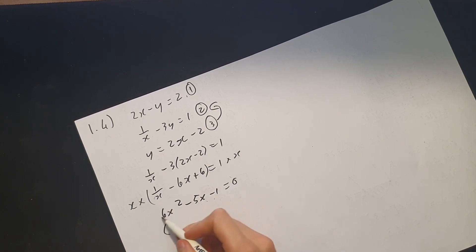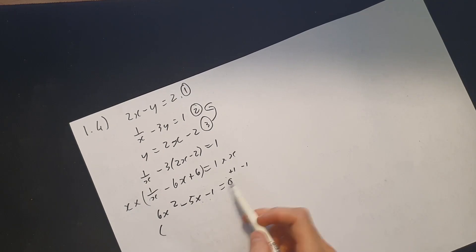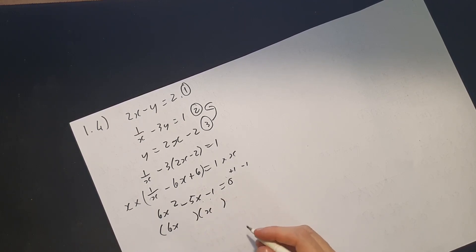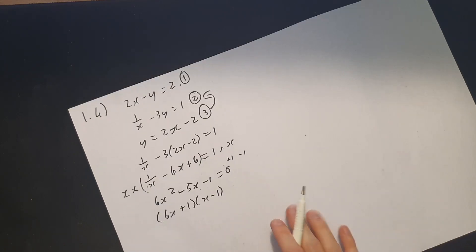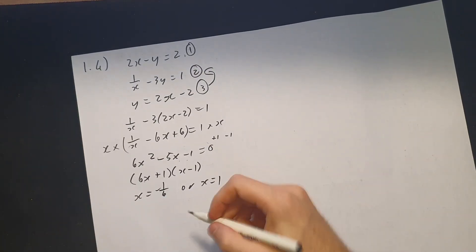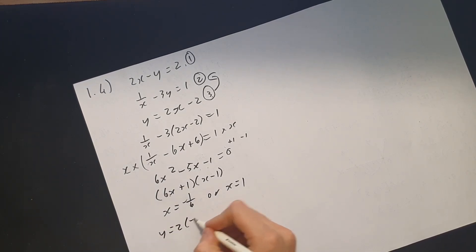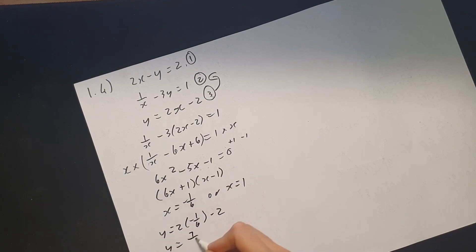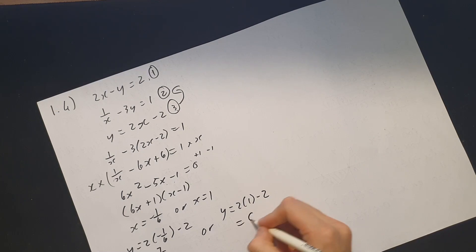Factorizing: the factors of 1 are +1 and −1. We get (6x + 1)(x − 1) = 0, so x = −1/6 or x = 1. Substituting back into y = 2x − 2: when x = −1/6, y = −7/6; when x = 1, y = 2(1) − 2 = 0.